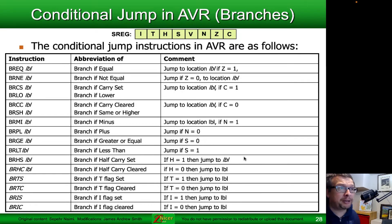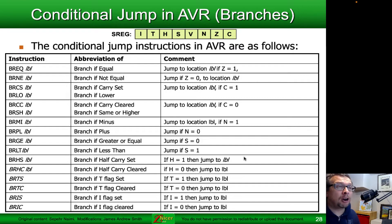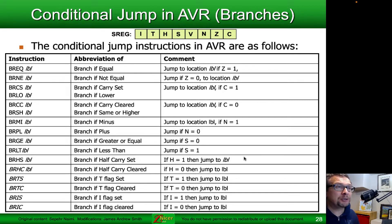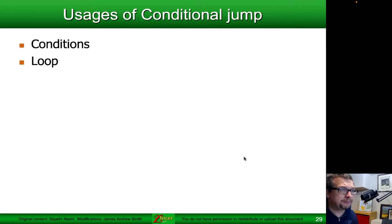You can see at the top of the slide the bits I, T, H, S, V, N, Z, and C — these are all individual bits within the 8-bit status register. For instance, Z refers to zero, and C refers to carry. These are important to know about.